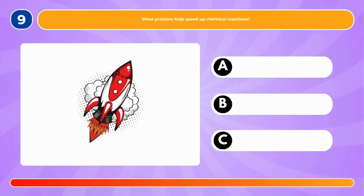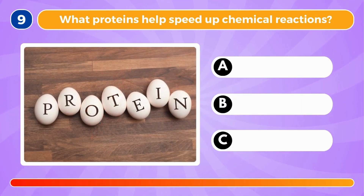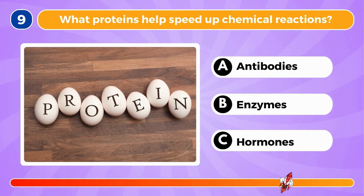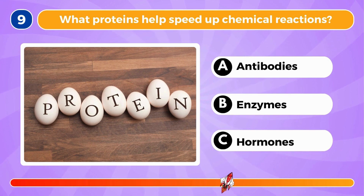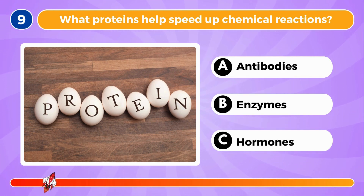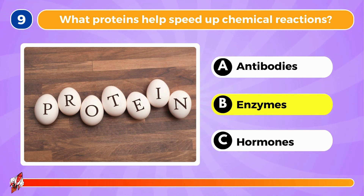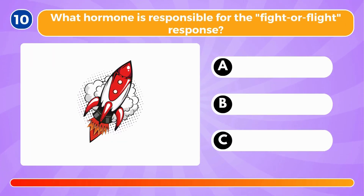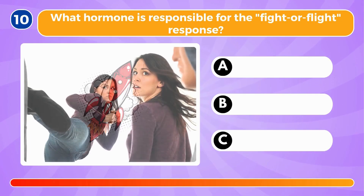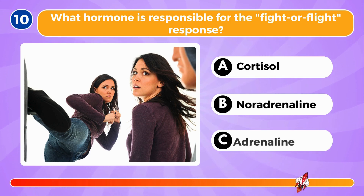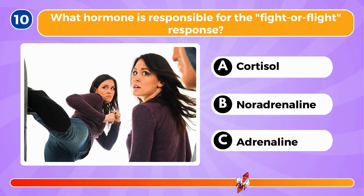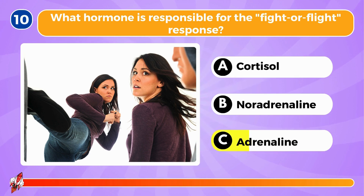What proteins help speed up chemical reactions? The proteins are called enzymes. What hormone is responsible for the fight or flight response? Adrenaline is responsible.